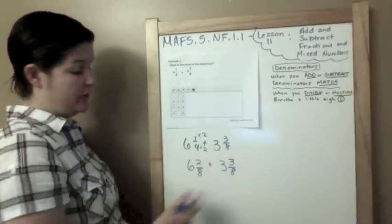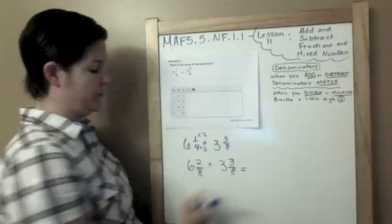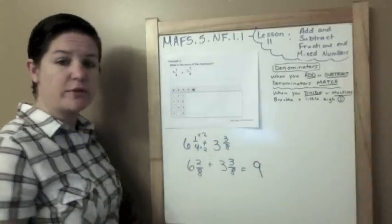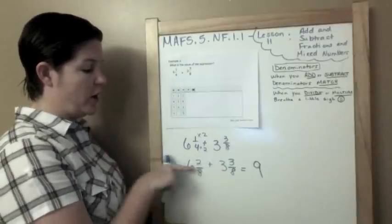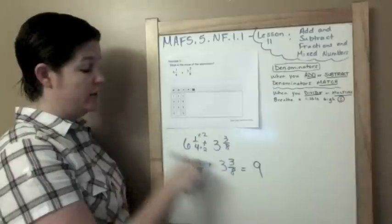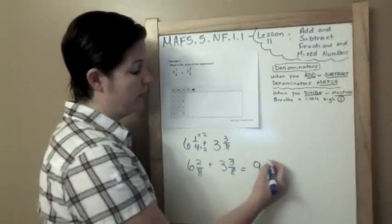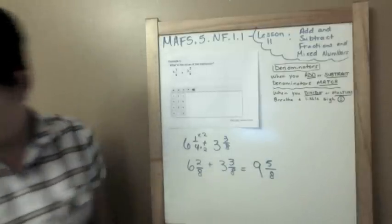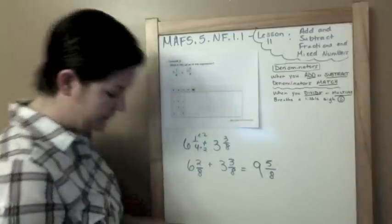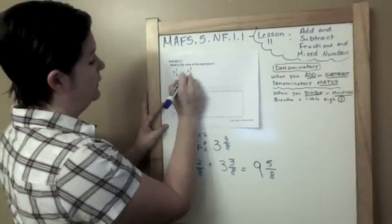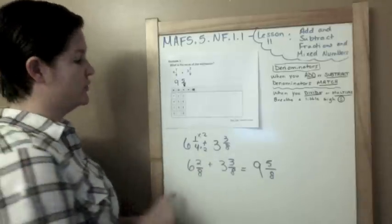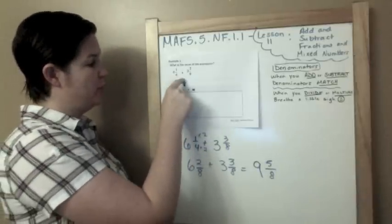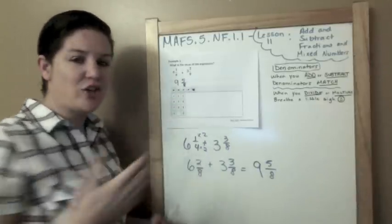So now I can add across. So let me add my whole numbers first. Six plus three is nine holes. Six holes plus three holes is nine holes. And when we're adding, we just add across with the numerator. So two plus three would be five, and our denominators stay the same. They have to match. So we would have nine and five eighths. So here I would write down nine, five eighths. But yours is a computerized test. So you would click nine, and then you would make sure that you go over. You would click the fraction. In the top, you would put five. In the bottom, you would put eight. And you would be finished.